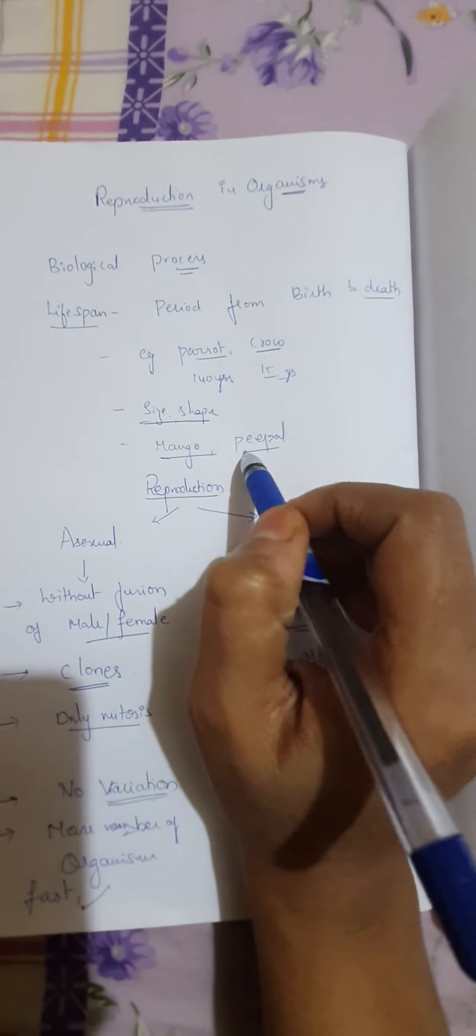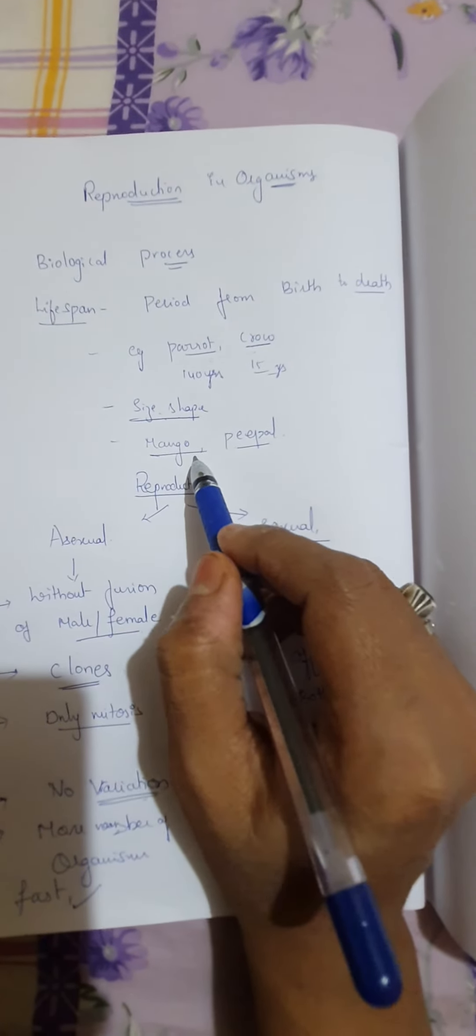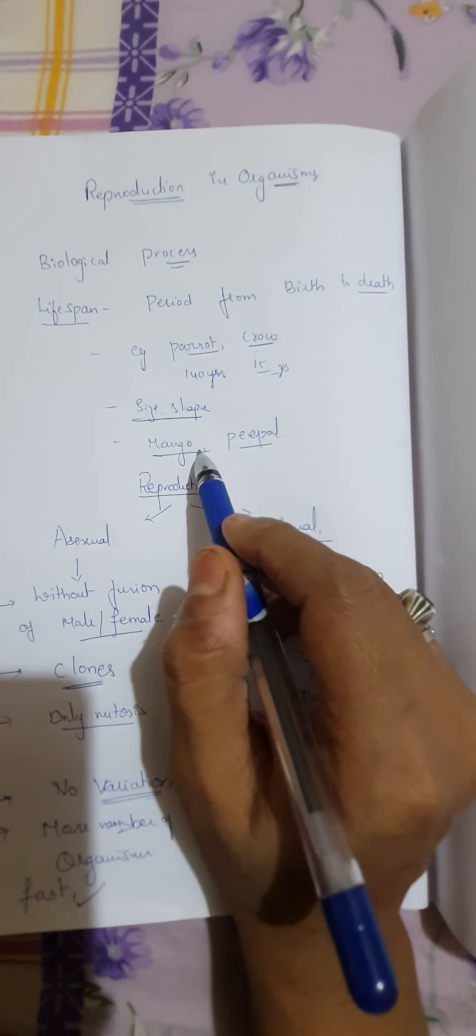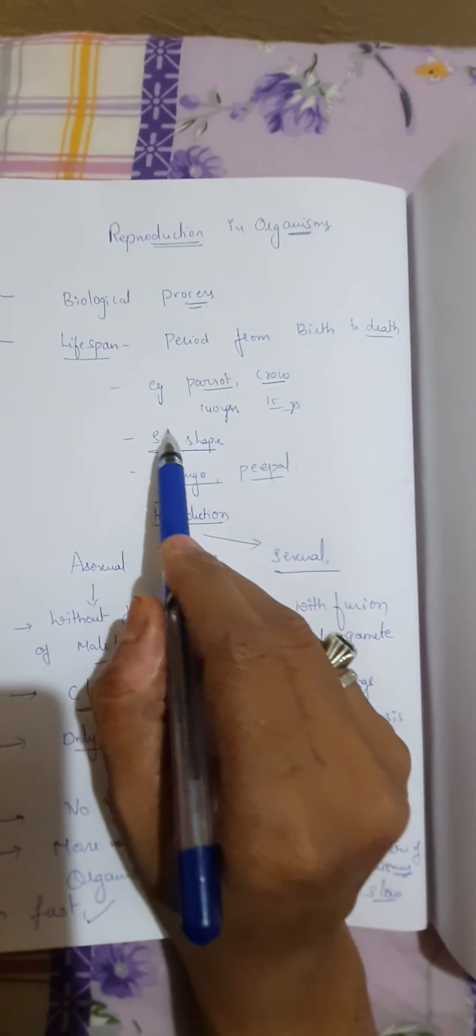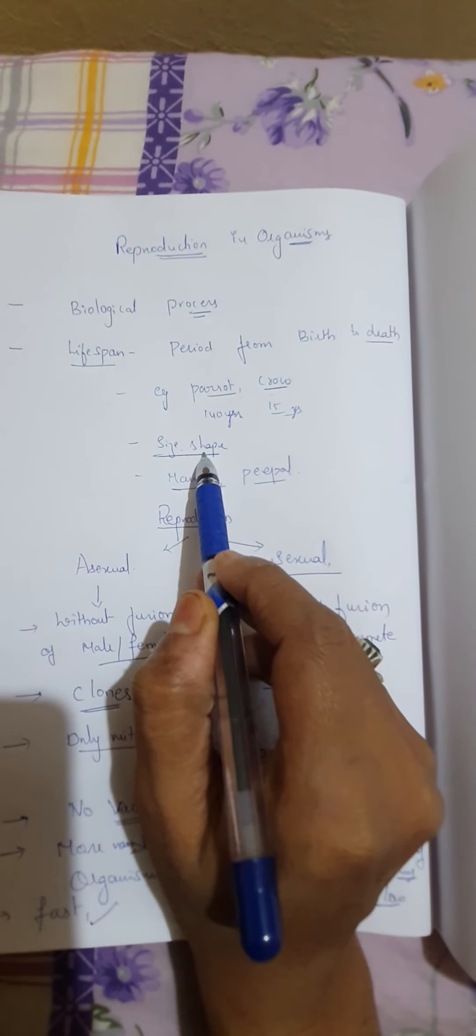For example, mango and peepal. They both have their leaves and flowers and look very similar. But their lifespans are different completely. So lifespan is not dependent on the size and shape.